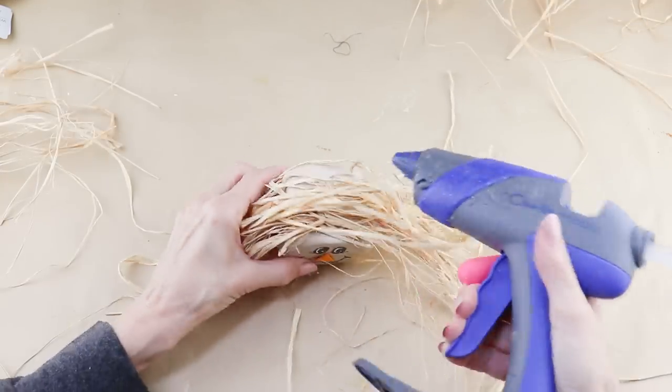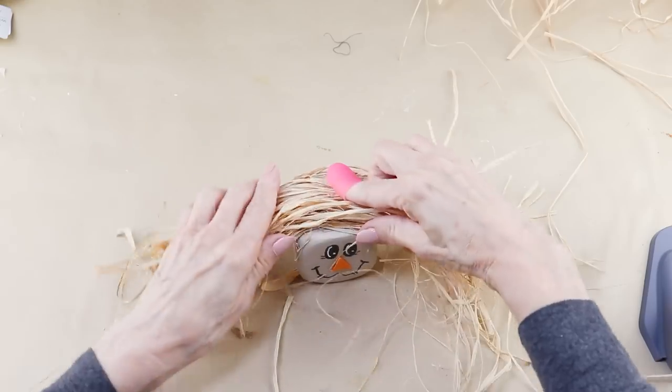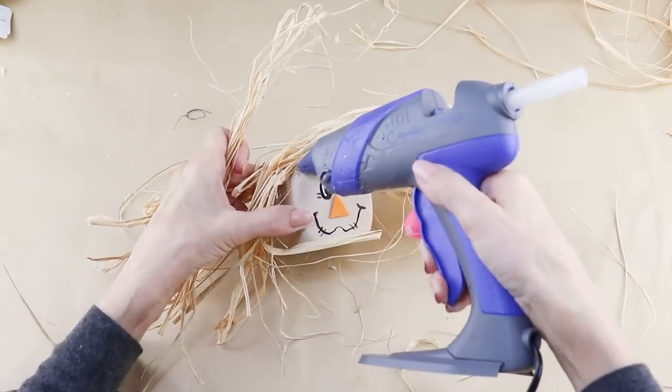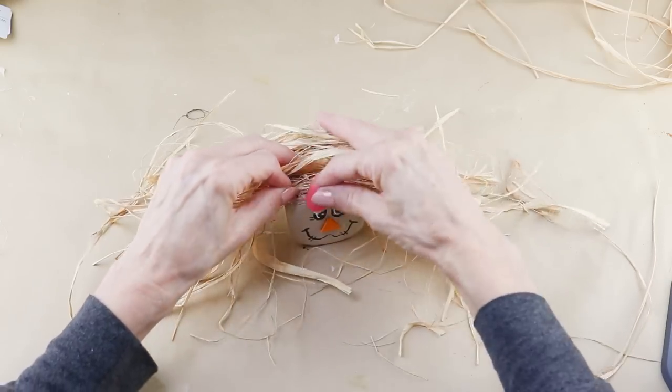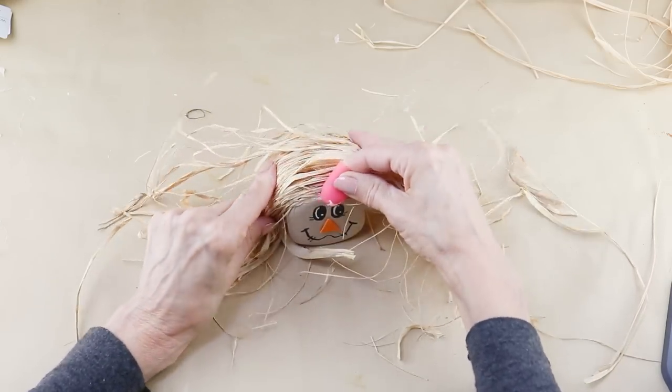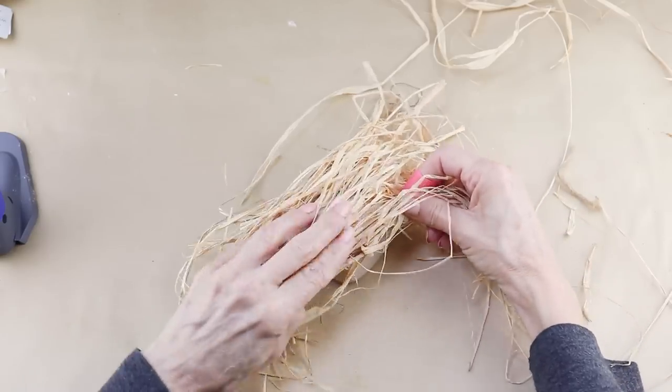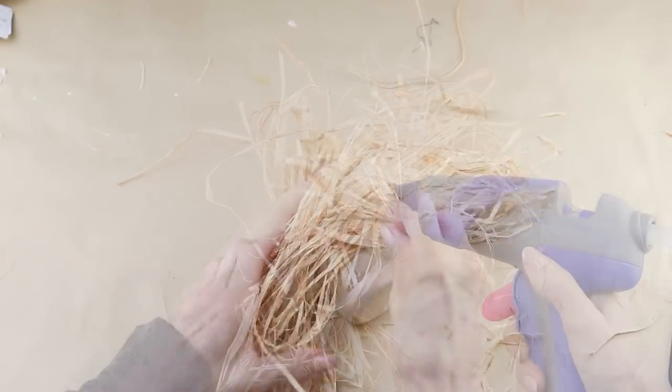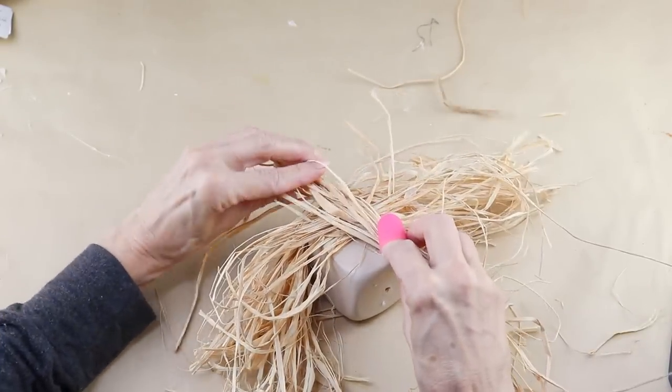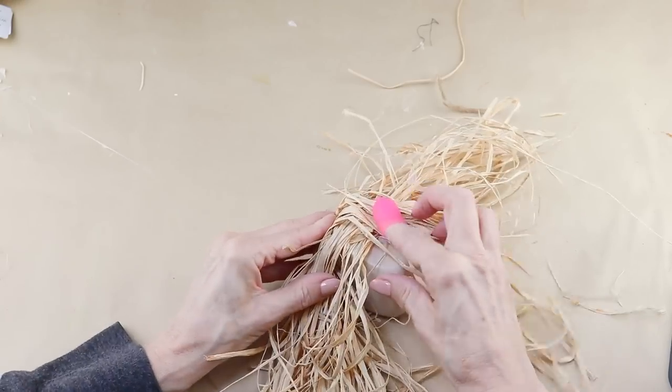Once that's attached, I'm just continuing on and adding the raffia to the scarecrow's head. While I was adding the raffia, I wasn't super fussy, and once the top was complete, I then turned it around and added some onto the back. When I was done to finish up, I added some hot glue to the back, and then I added some raffia hanging from the top of the head and down over the back.